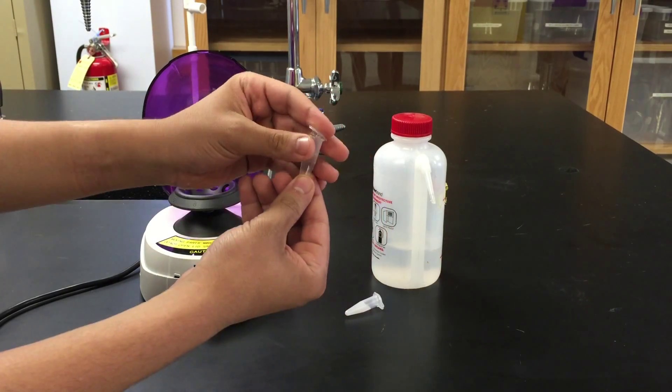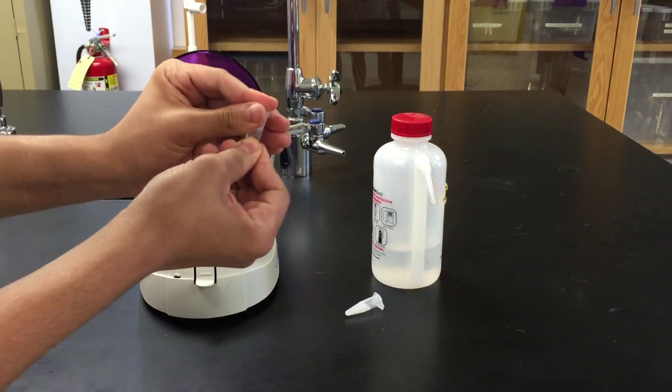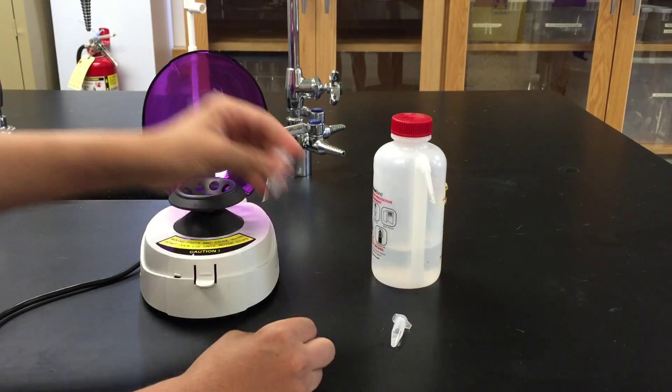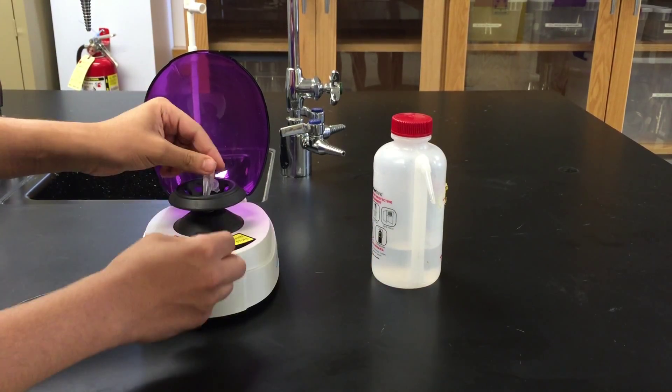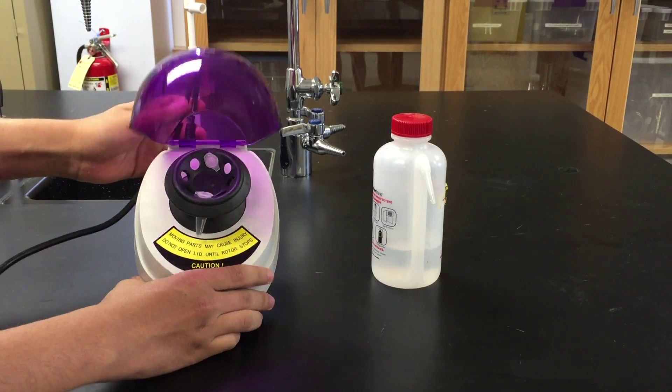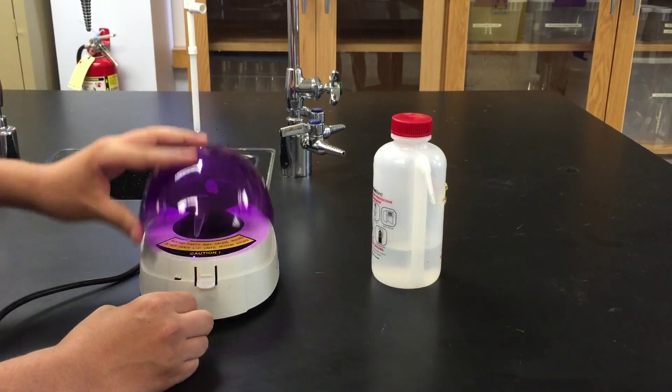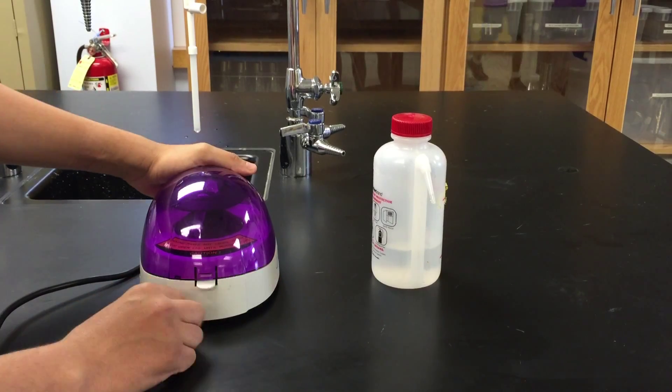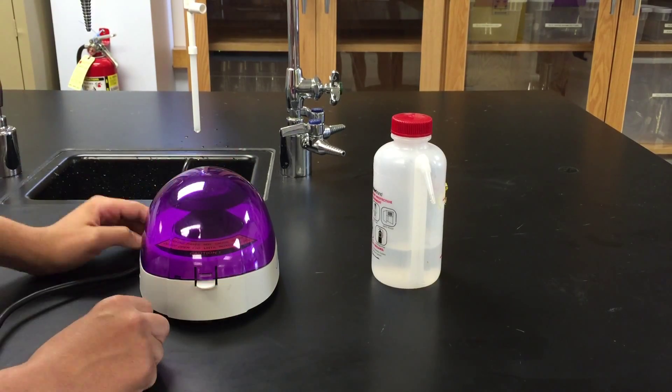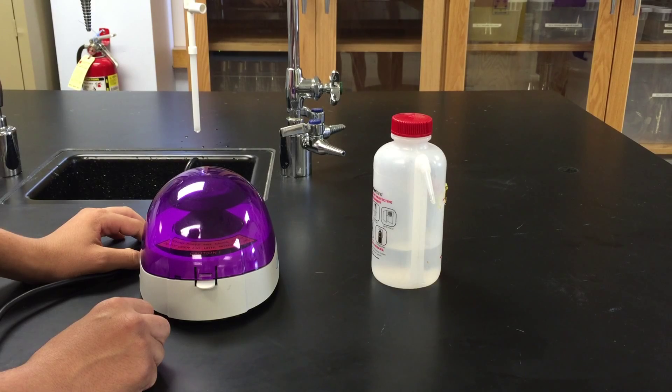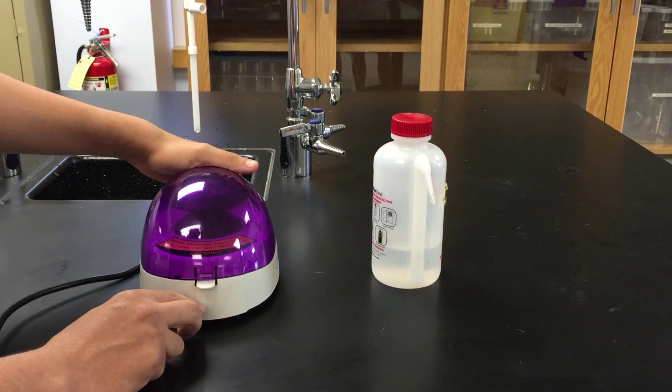And when you place the tubes in the centrifuge machine, arrange them symmetrically. So if you have two, place them across from each other as shown. If you have three, you would still place them symmetrically. Now turn on the machine and let it run for a few seconds. If you hear a vibrating sound, that means the centrifuge isn't balanced, and you should quickly turn it off and check to see what the problem is.